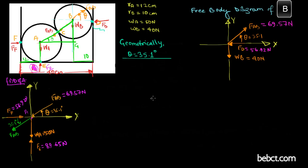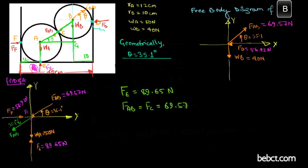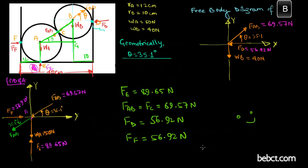We have now calculated all the required reaction forces using free body diagrams and the conditions of equilibrium. Force at E equals 89.65 Newtons, force AB — which is also the force at C, the mutual force — equals 69.57 Newtons, force at D equals 56.92 Newtons, and force at F equals 56.92 Newtons. That's all for this video — thanks for watching.